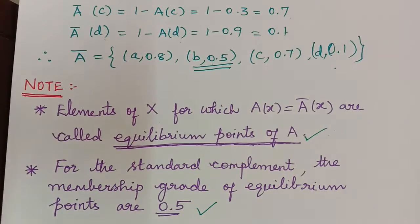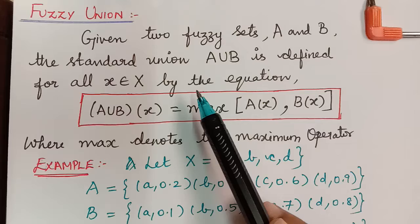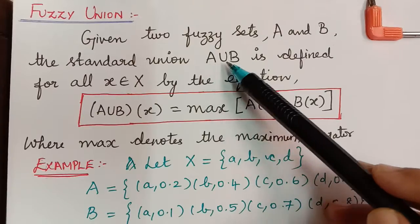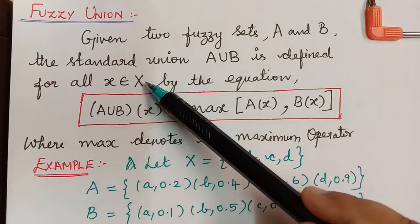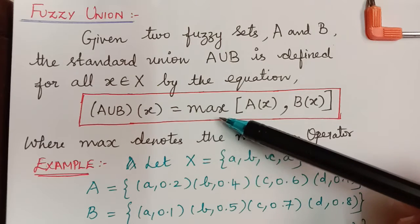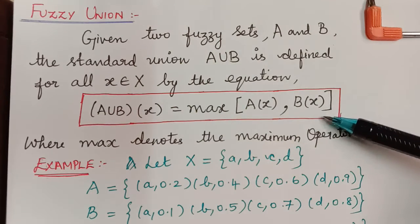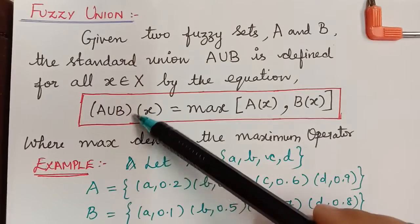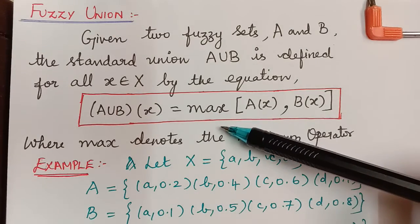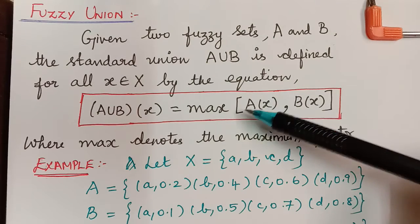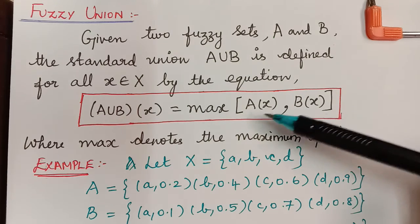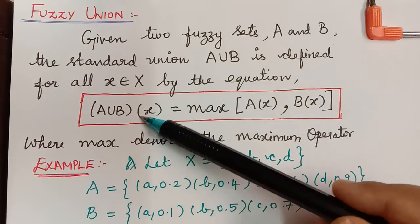Next we shall learn about fuzzy union and fuzzy intersection. Given two fuzzy sets A and B, the standard union A∪B is defined for all x ∈ X by: (A∪B)(x) = max(A(x), B(x)). The membership grade of an element in the union set equals the maximum of its membership grades in A and B.